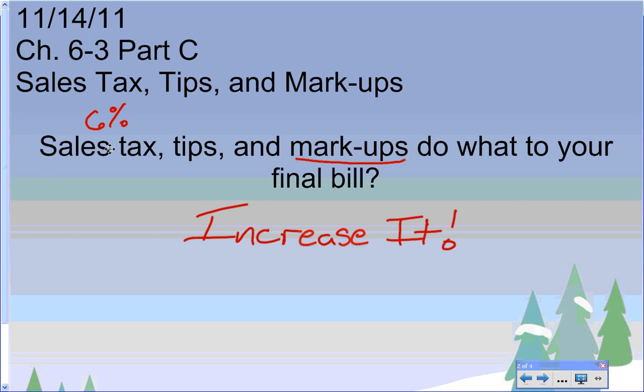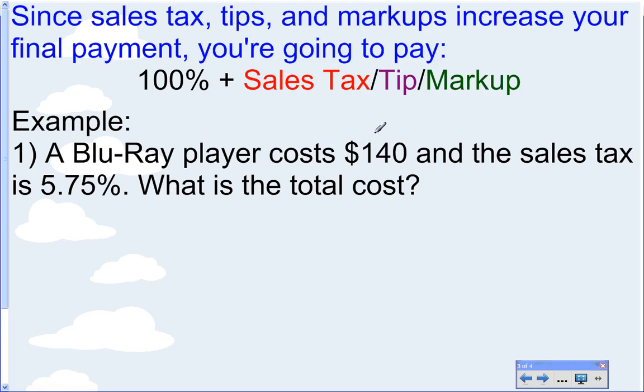All right, so all of the items that we're going to talk about today are going to increase your final bill. I'm going to teach you a different way than the book teaches you. The book has you do it in two steps. I'm going to try to basically do it in one step. Here's what I need you to understand. We said that all of these things increase your final cost. So, your final cost is going to be made up of 100% of the original cost. Whatever the original cost is. Plus, the sales tax tip or markup.